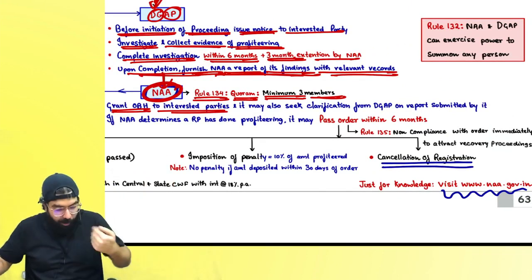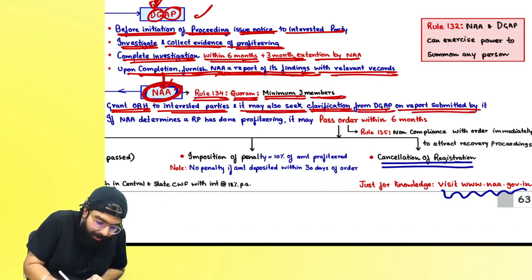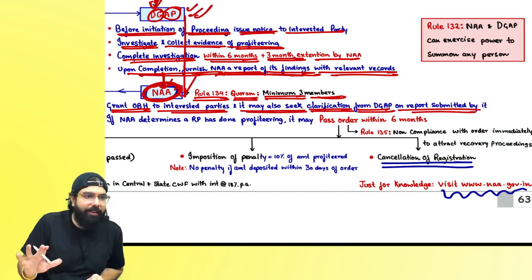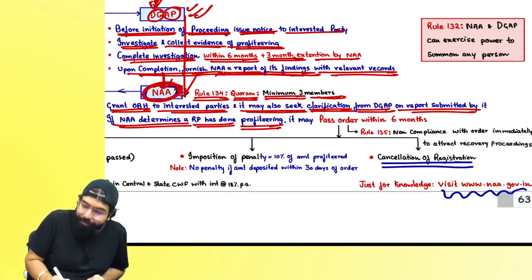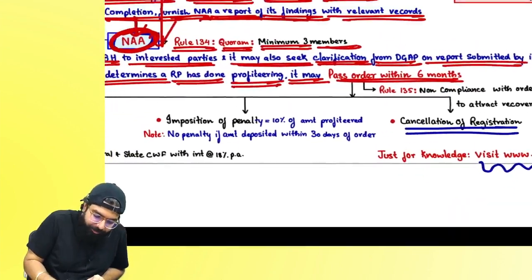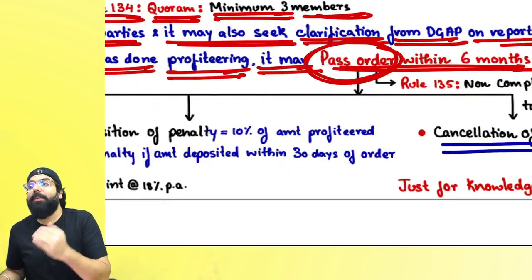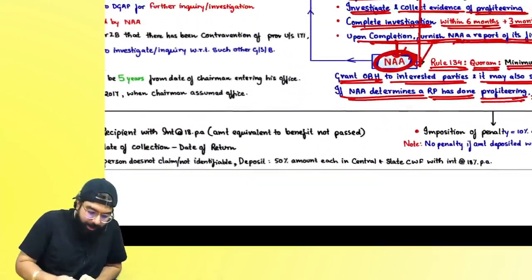The NAA will give the opportunity of being heard — calling both the dosa seller and the consumer. It may also seek clarification from DGAP on the report submitted. If the National Anti-Profiteering Authority determines that a person has done profiteering, it will pass an order within six months.